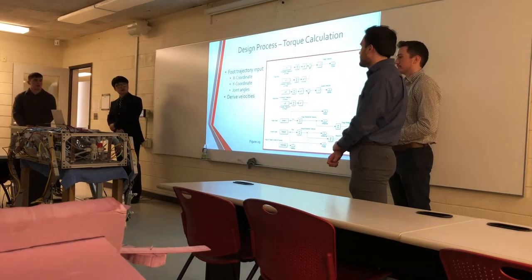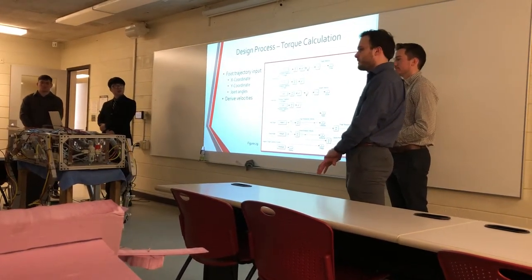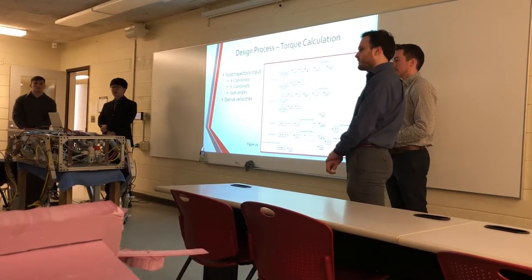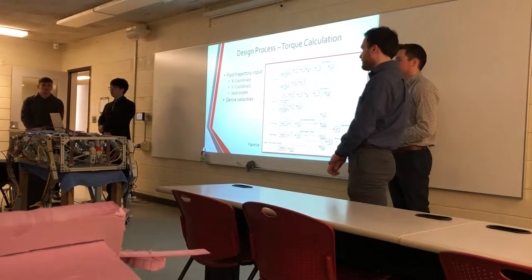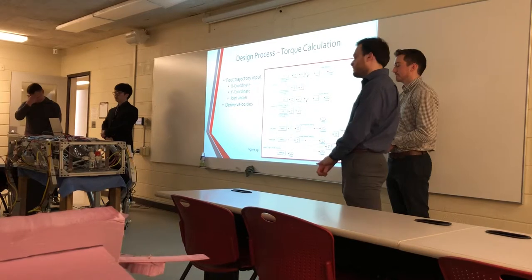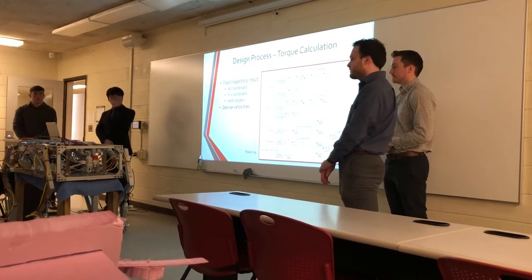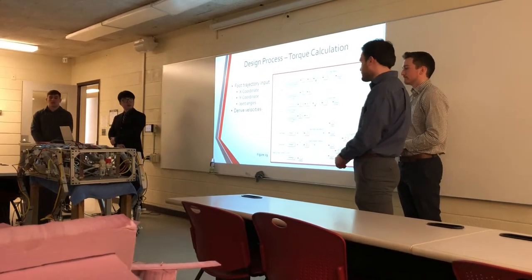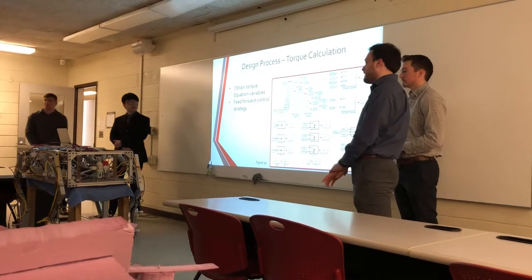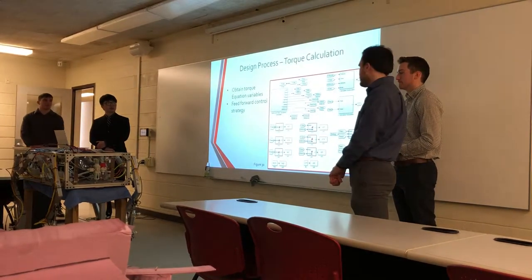To model this, we use Simulink once again, where we input the foot trajectory as an input — specifically the x and y coordinates. Through this we can derive the translational velocity. Using the inverse kinematics that Mira talked about earlier, we can get the thigh and calf angles, which then convert to rotational velocity or rotational acceleration. These are then output into a larger system, which directly inputs them into MATLAB subfunctions, calculating each cell of the matrices previously described in figure 28.